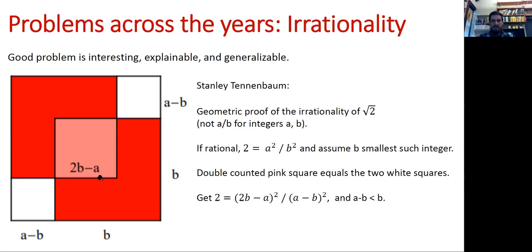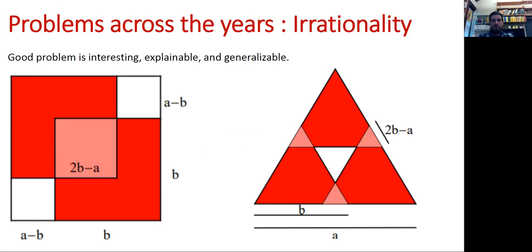Well, when the dust settles, you see that this gives you another representation of 2 equals 2b minus a, the length of this side squared, divided by a minus b, the length of this side squared. And a minus b is less than b, so that this is truly smaller. So again, you should never really do too much algebra in public, especially not quickly. But the idea is given one solution, we're able to find a smaller one.